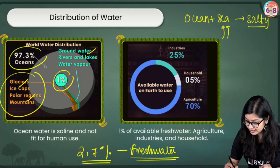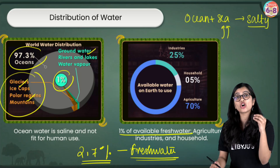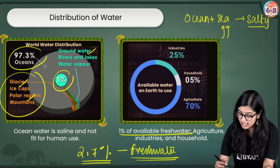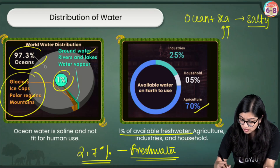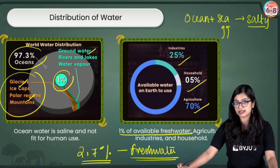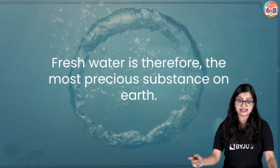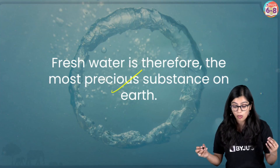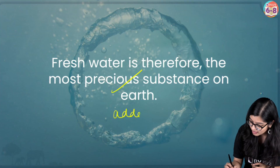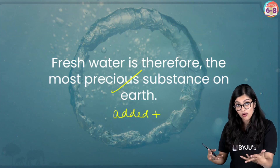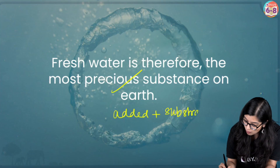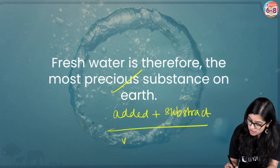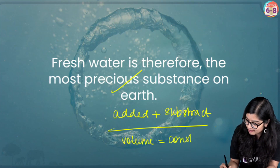This 1% of available freshwater is exhaustively used — very intensively for agriculture, industries, and of course for household purposes. Fresh water is a precious substance on earth. Understand that water can neither be added nor subtracted — you cannot make more water, and you cannot make water disappear. The volume of water on earth will always remain constant.